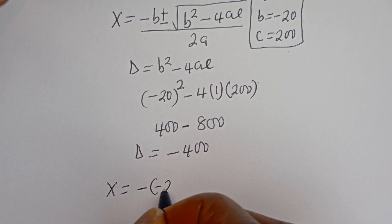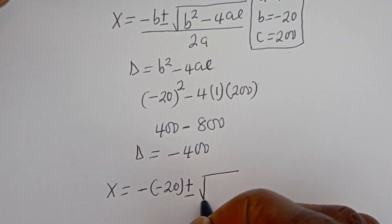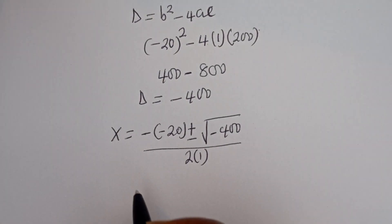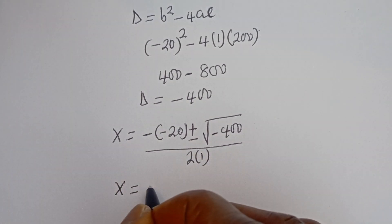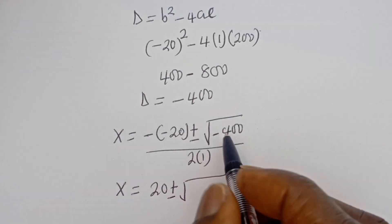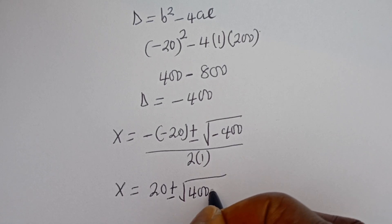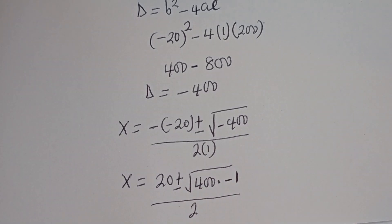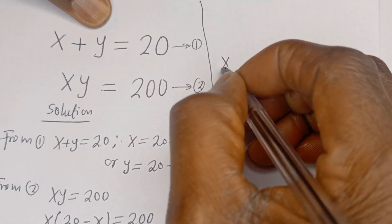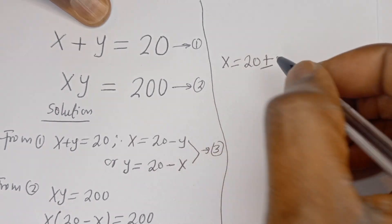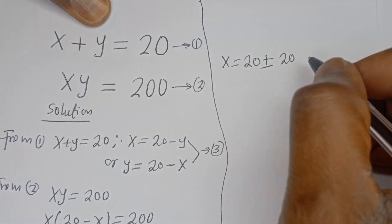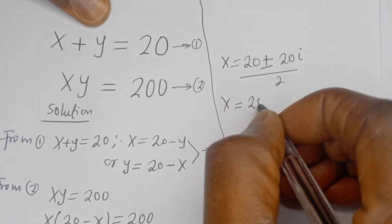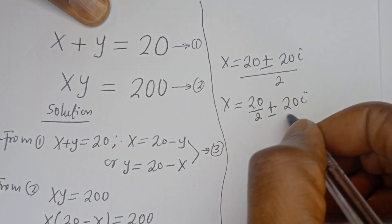Now let's plug in: X is equal to minus bracket minus 20, plus or minus square root of minus 400, divided by 2 multiplied by 1. This gives us 20 plus or minus square root of minus 400. Now minus 400 can be written as 400 multiplied by minus 1. So the square root of 400 is 20, and the square root of minus 1 is i, divided by 2.